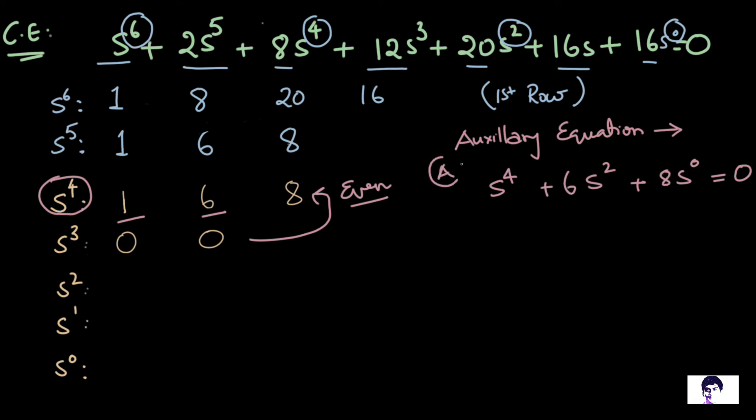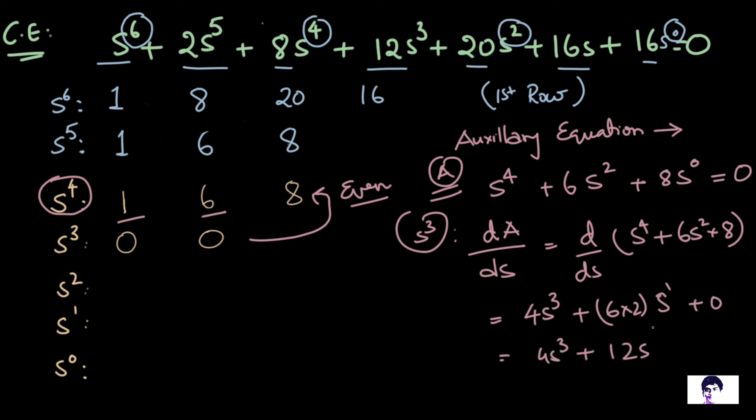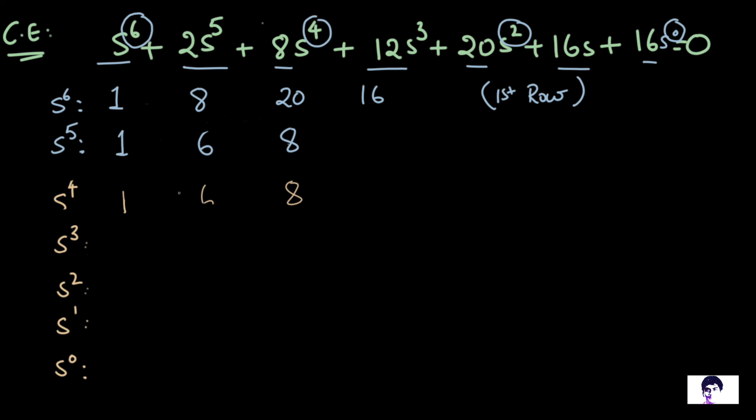Now, S^3, I mean the equation for S^3, is formed by differentiating the auxiliary equation with respect to S, which would give us 4S^3 + 12S. So now the elements of the S^3 row are 4 and 12. And these elements have a highest common factor of 4. So I'm going to divide the entire row by 4 to get the elements 1 and 3. I'm just clearing it out and rewriting it.